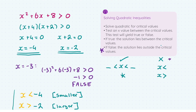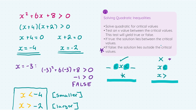And there we have it — this is our solution to that inequality. Once more, it is vital to know your two solution sets. You're either going to have that x is between two critical values, written as a compound inequality with less-than signs, or you're going to have that x is outside your two critical values, with x less than one critical value and greater than the other.